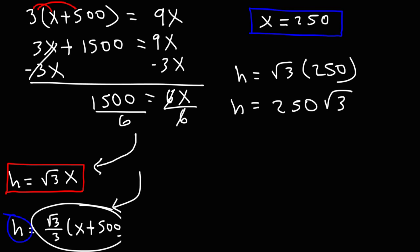Now let's get a decimal value for that. So h is approximately 433.01, but we could round it to the nearest whole number.